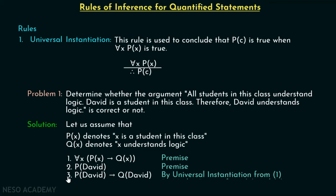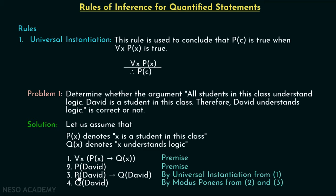Now, from the second and third steps, we can say Q(David) is true. This holds by the rule of modus ponens — if P is true and P implies Q is true, then Q has to be true. So Q(David) is true, which means David understands logic. The conclusion is derived from the set of premises, so we can say our argument is valid. This is the use of universal instantiation.